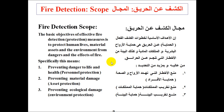Fire detection scope: why are we using fire detection? We are using fire detection to protect human lives, to protect material, to protect assets and the environment from the dangers and effects of fire. A fire can destroy anything. So we need to protect the places where we are staying and where we are working — for example, hotels, homes, companies, and storage areas.